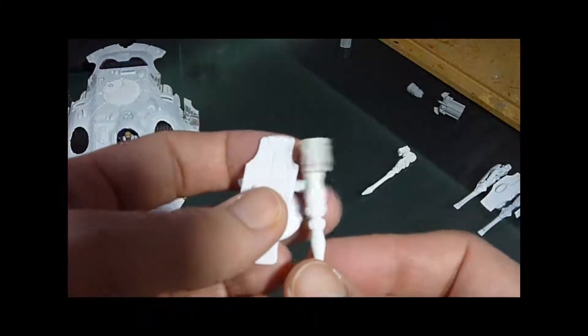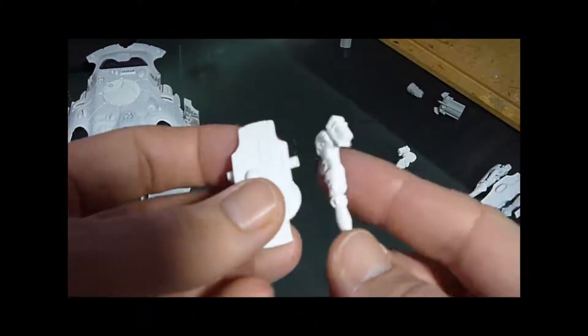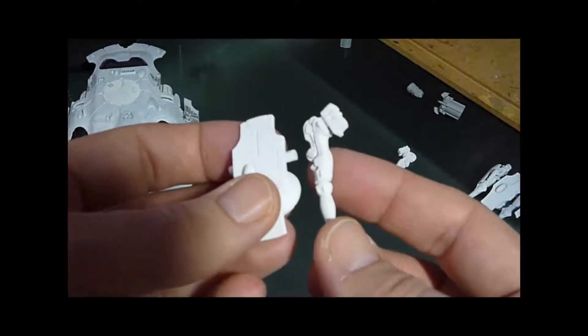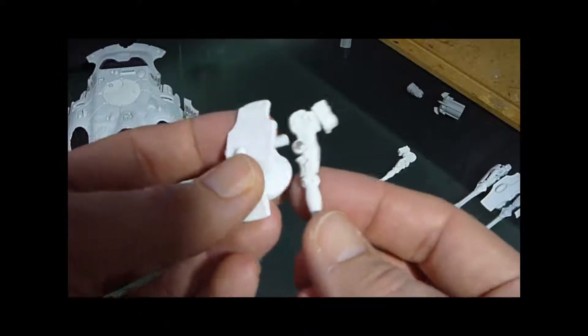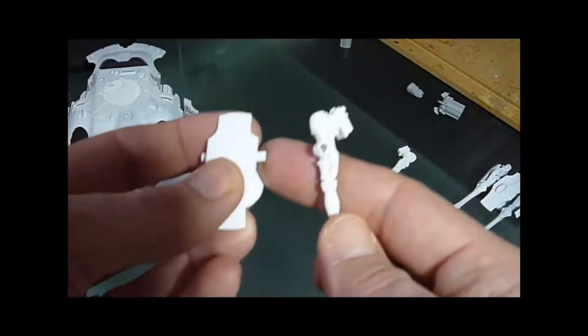And when I was building my Valken, I did notice actually that the gun on the side, even after painted, actually fits in quite well. So on my next Wave Serpent, I didn't actually magnetize that section.